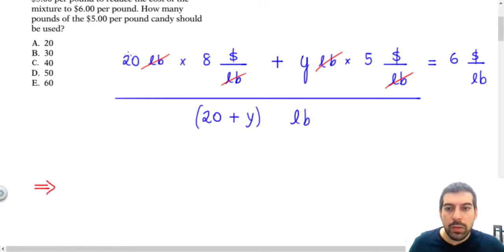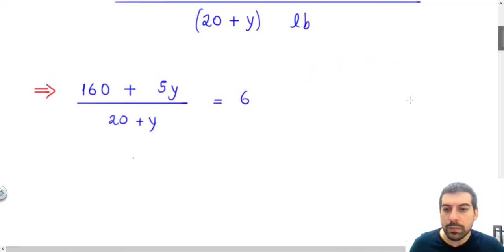In the left, we have 20 times 8, that is equal to 160, plus 5 times Y, so it's 5Y, divided by 20 plus Y, being equal to 6. Once I know that the unity of the left will be equal to the unity of the right, I'm not using unities here. This 6, you can think of as 6 divided by 1.